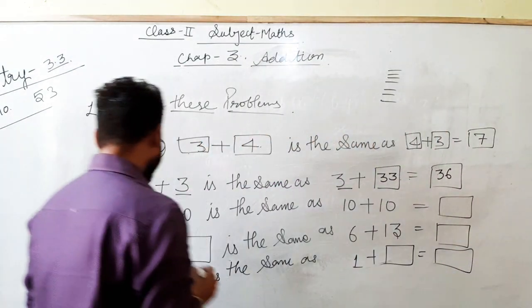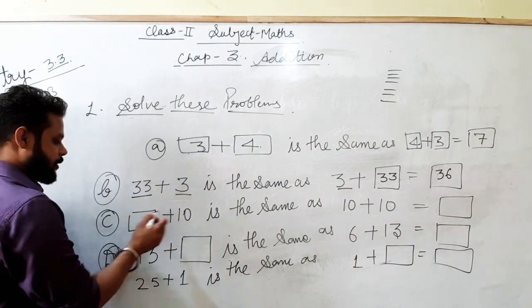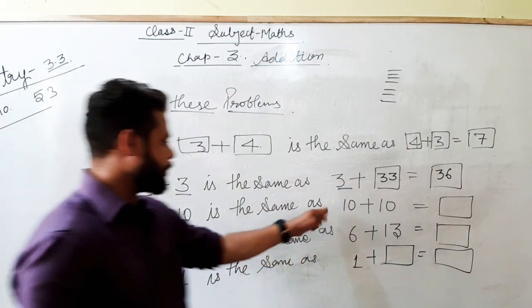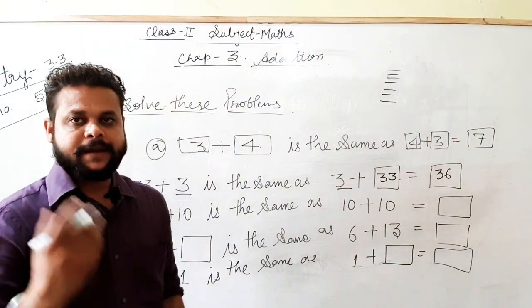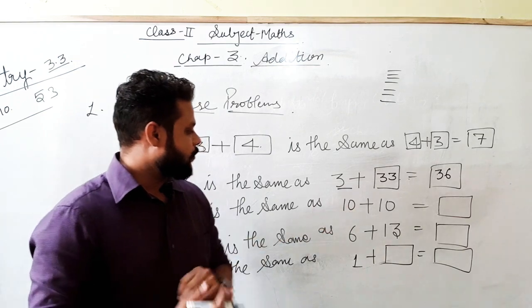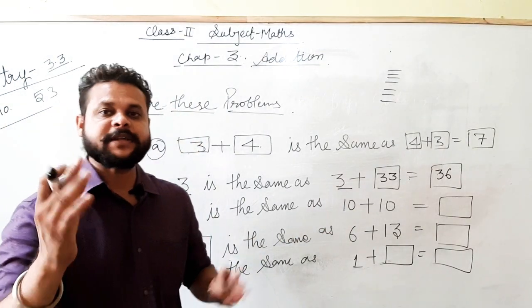Now, plus 10 is the same as 10 plus 10. Thik hai? 10 plus 10 means? 10 plus 10 equal to 20. Hai na? 10 plus 10 kitnay ho jayenghe? 20 ho jayenghe na?